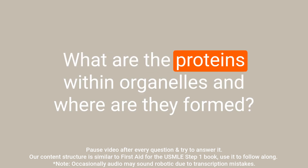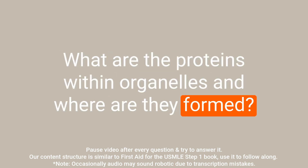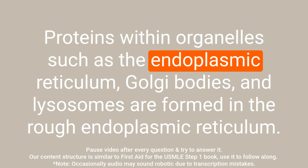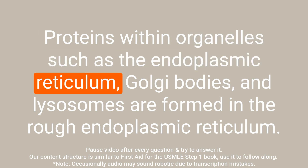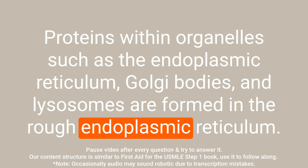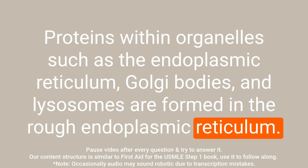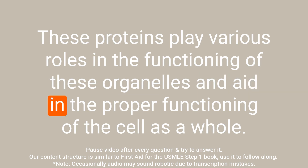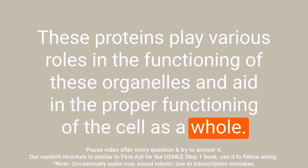Question: What are the proteins within organelles and where are they formed? Answer: Proteins within organelles such as the endoplasmic reticulum, Golgi bodies, and lysosomes are formed in the rough endoplasmic reticulum. These proteins play various roles in the functioning of these organelles and aid in the proper functioning of the cell as a whole.